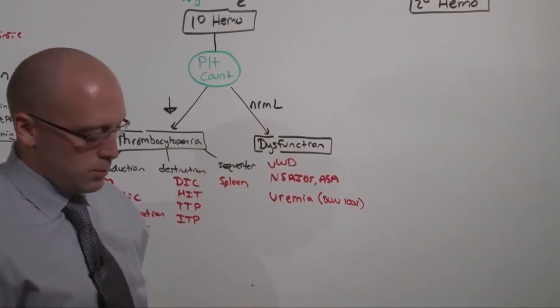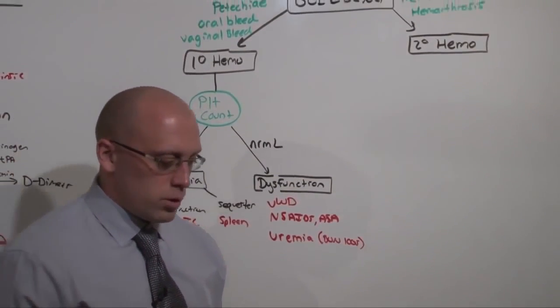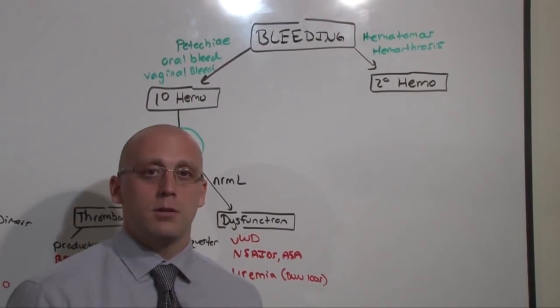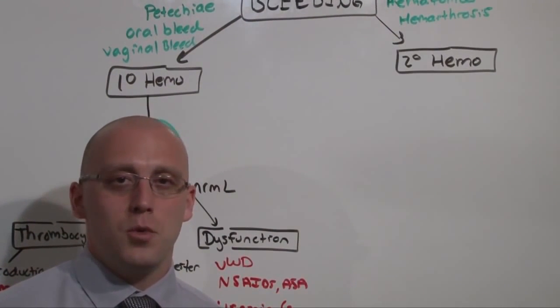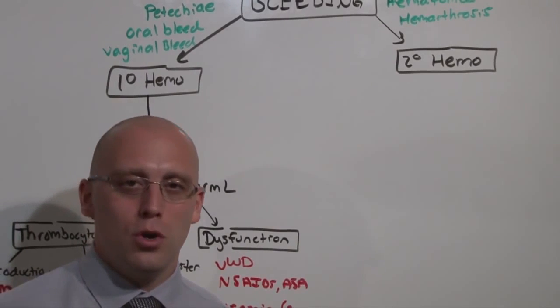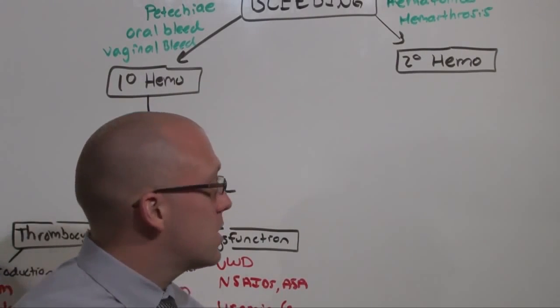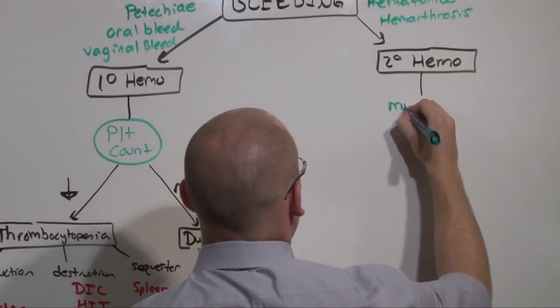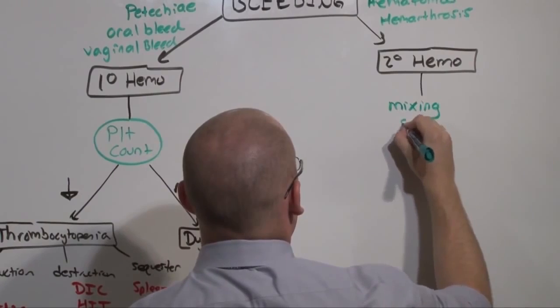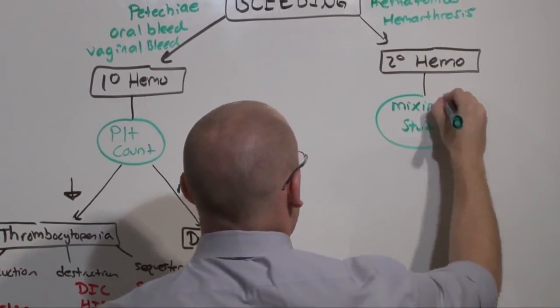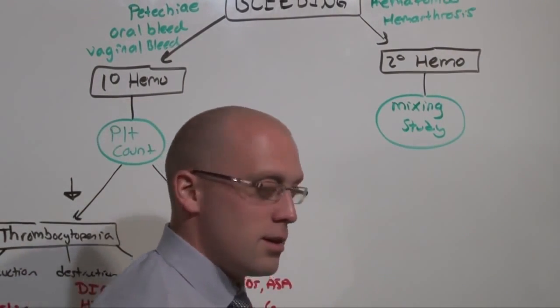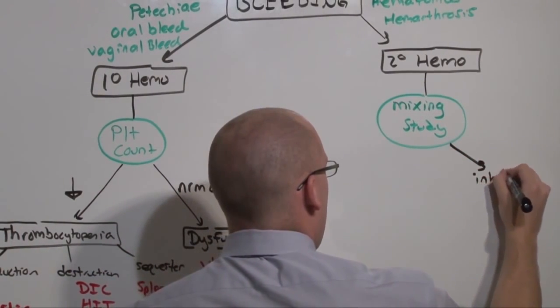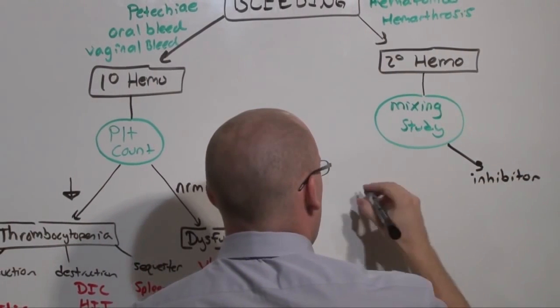Let's jump back over to secondary hemostasis. You've clinically reasoned that they have a disease of secondary hemostasis, period. Getting the coag panel will not tell you anything extra. You know the coag panel will be abnormal. Instead, what you want to do is get a mixing study. You get a mixing study because it will give you the coags, and then it will tell you the difference between inhibitor disease or factor deficiency.